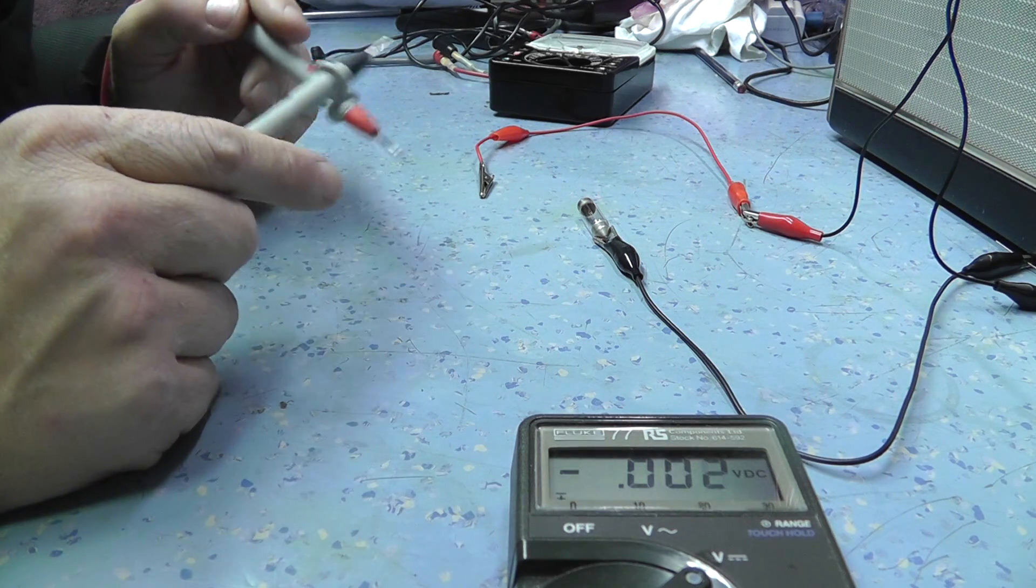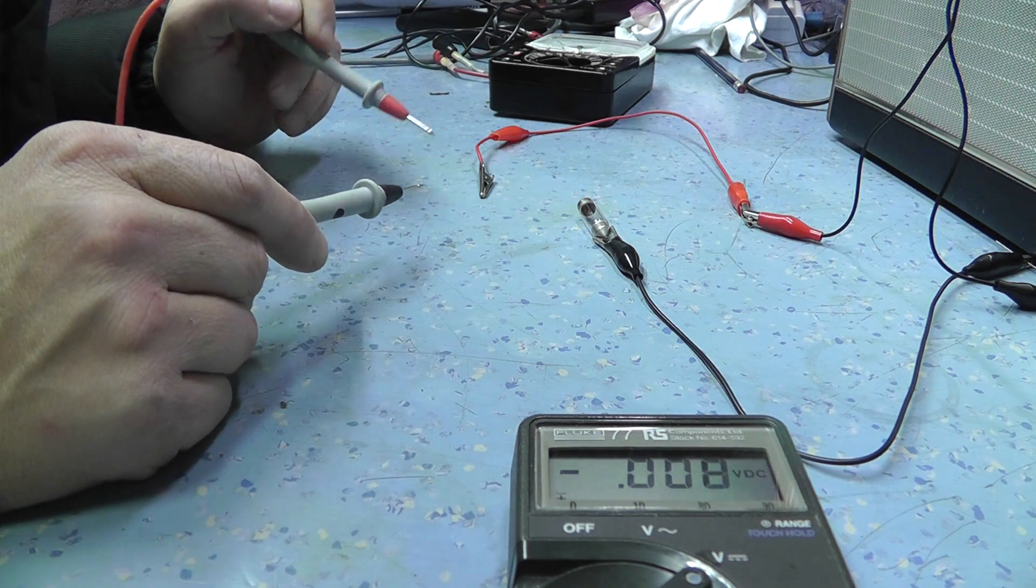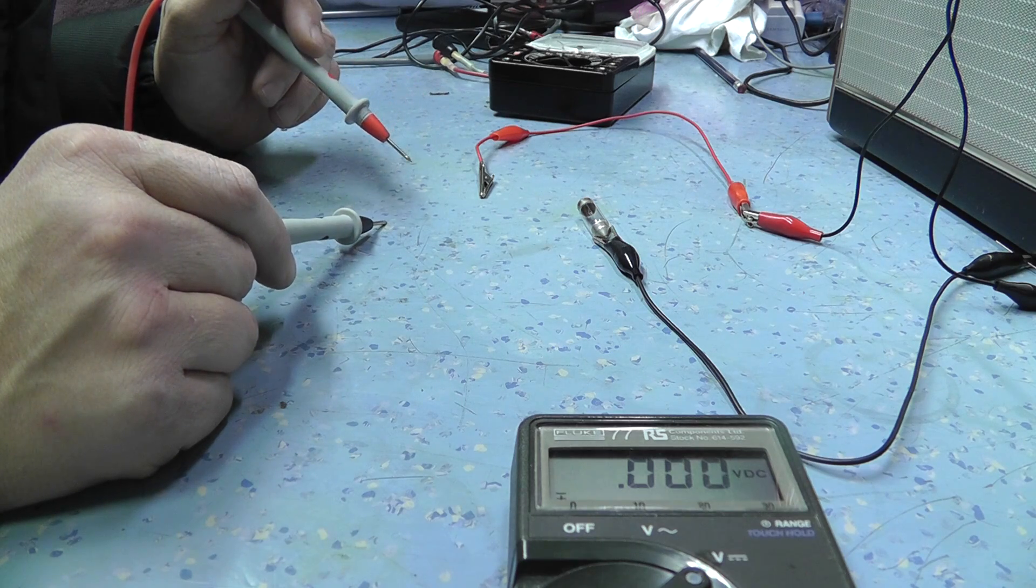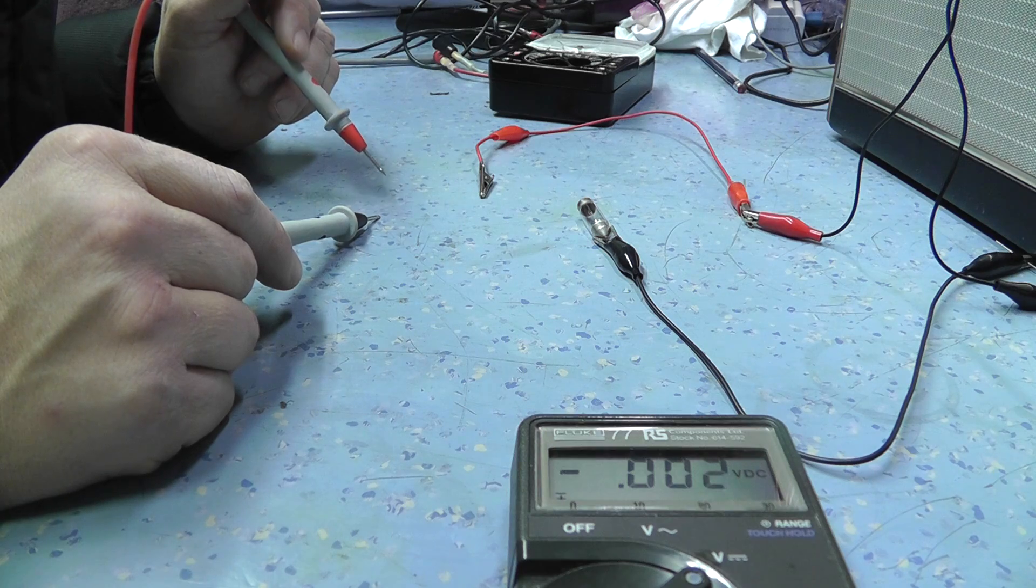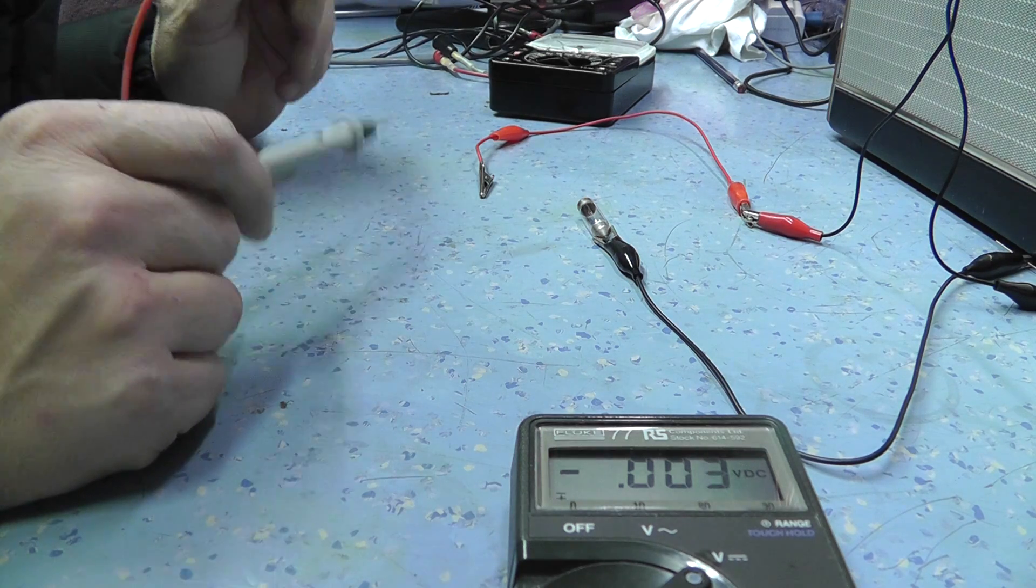He said he's had a mate come round who knows a bit about electrics, and he's checked the connection, and he said there's 12 volts on the supply. But what I don't understand is when I plug it into the bulb, the bulb doesn't light up.